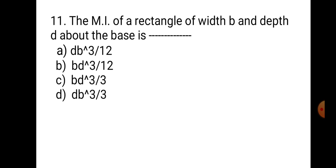Question number 11. The MI of a rectangle of width B and depth D about the base is: A. DB³/12, B. BD³/12, C. DB³/3, and D. BD³/3. If you know I_XX for a rectangle, that is BD³/12, using the parallel axis theorem you can shift that MI to the base, and it comes out to be BD³/3. So the correct answer is D. BD³/3.